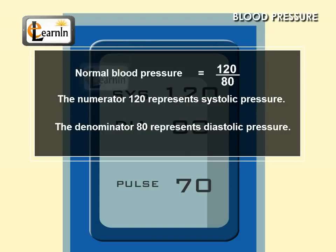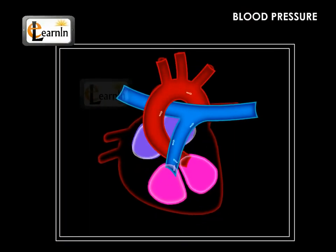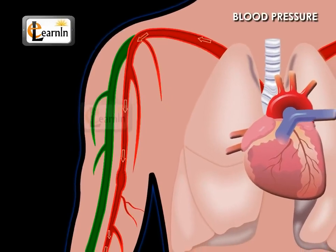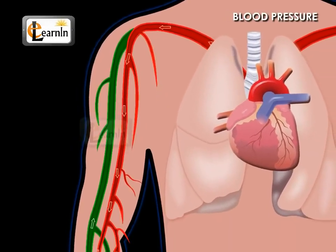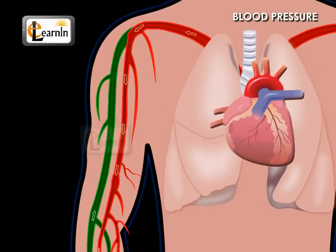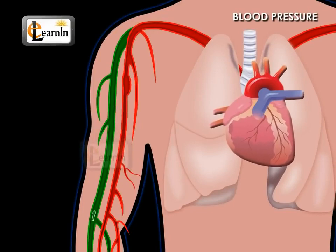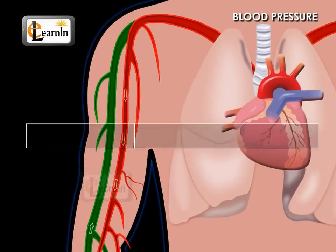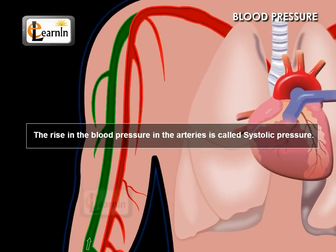During systole, when the ventricles contract, the blood is pumped into the arteries. So the blood pressure in the arteries increases immediately after the systole. This rise in the blood pressure in the arteries is called the systolic pressure.